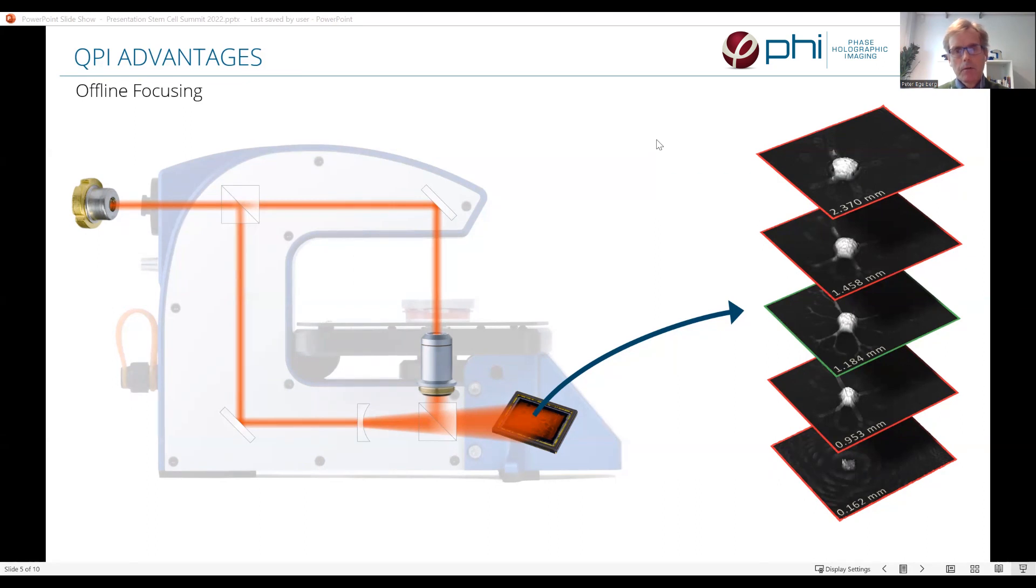The second advantage of QPI is that images are focused after they are recorded. From the hologram, a number of images are created at various focal distances. The mechanics are not moved. Instead, a parameter in the reconstruction algorithm is changed.